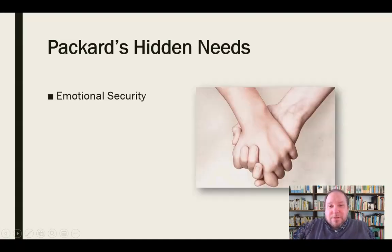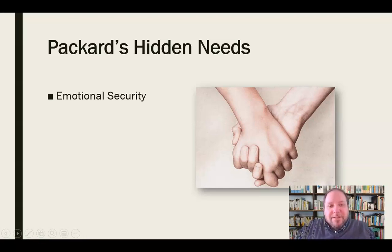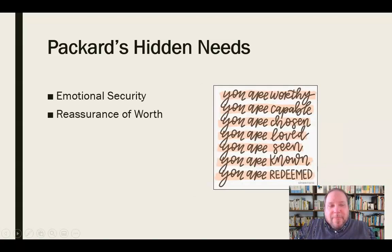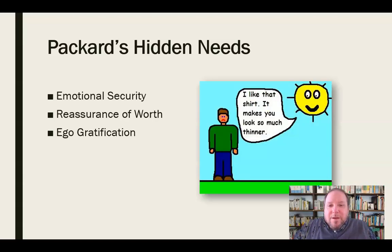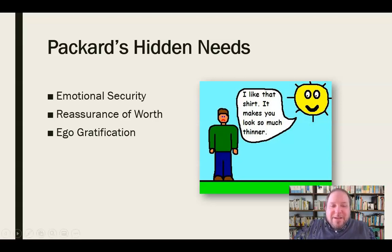The first hidden need he identified was emotional security — similar to Maslow's love and belonging — we need to feel connected to something and someone, to have that sense of being secure with who we are. The second is a reassurance of worth: we need somebody to reassure us that we are enough, that we are worthy, that we belong and are desired. The third is ego gratification — at times, people need others to stroke their egos, say nice things, build them up. A persuader can use ego gratification to psychologically reach an audience.